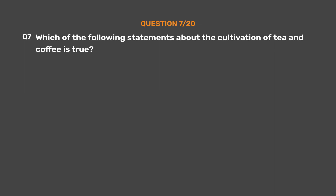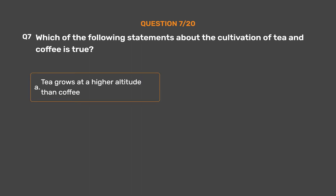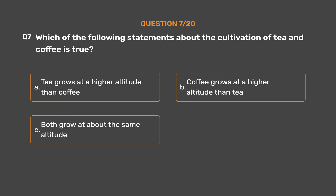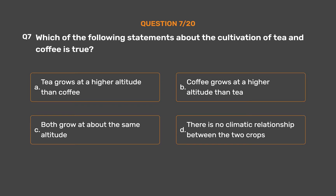Question number 7. Which of the following statements about the cultivation of tea and coffee is true? Option A: Tea grows at a higher altitude than coffee. Option B: Coffee grows at a higher altitude than tea. Option C: Both grow at about the same altitude. Option D: There is no climatic relationship between the two crops. The correct answer is Option A, tea grows at a higher altitude than coffee.